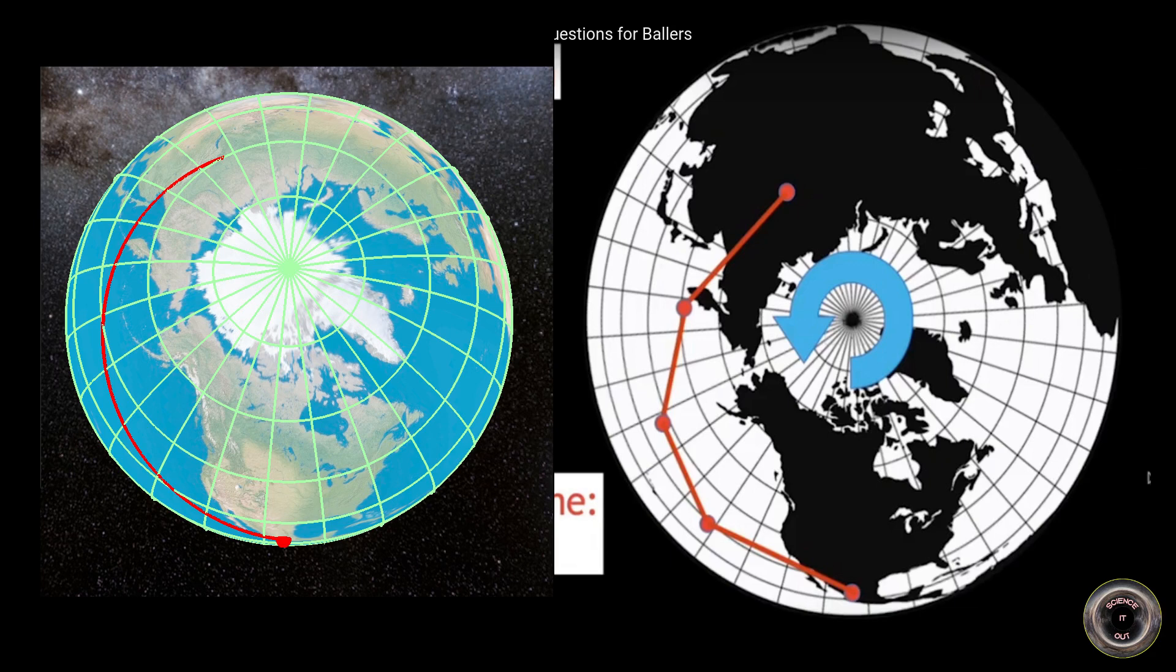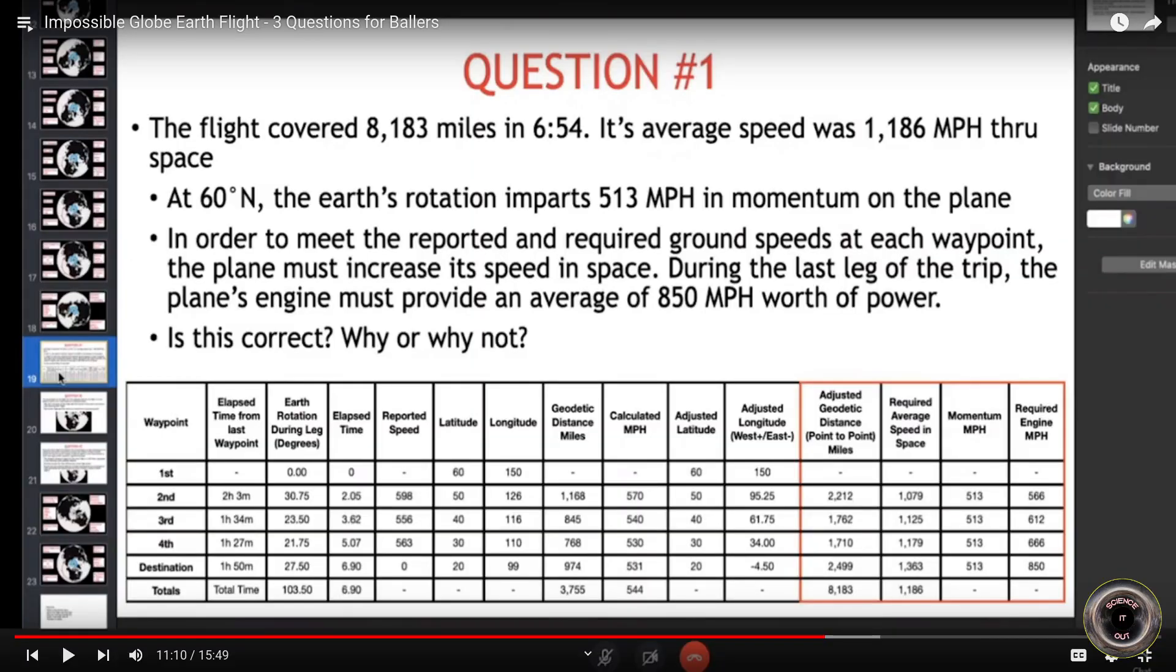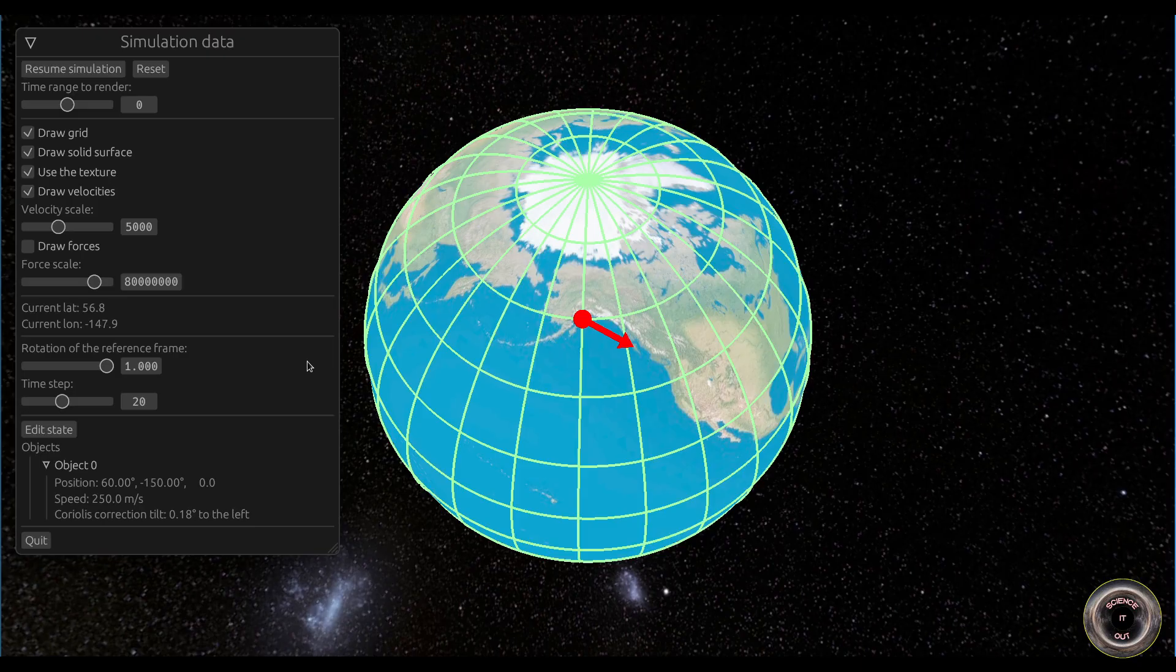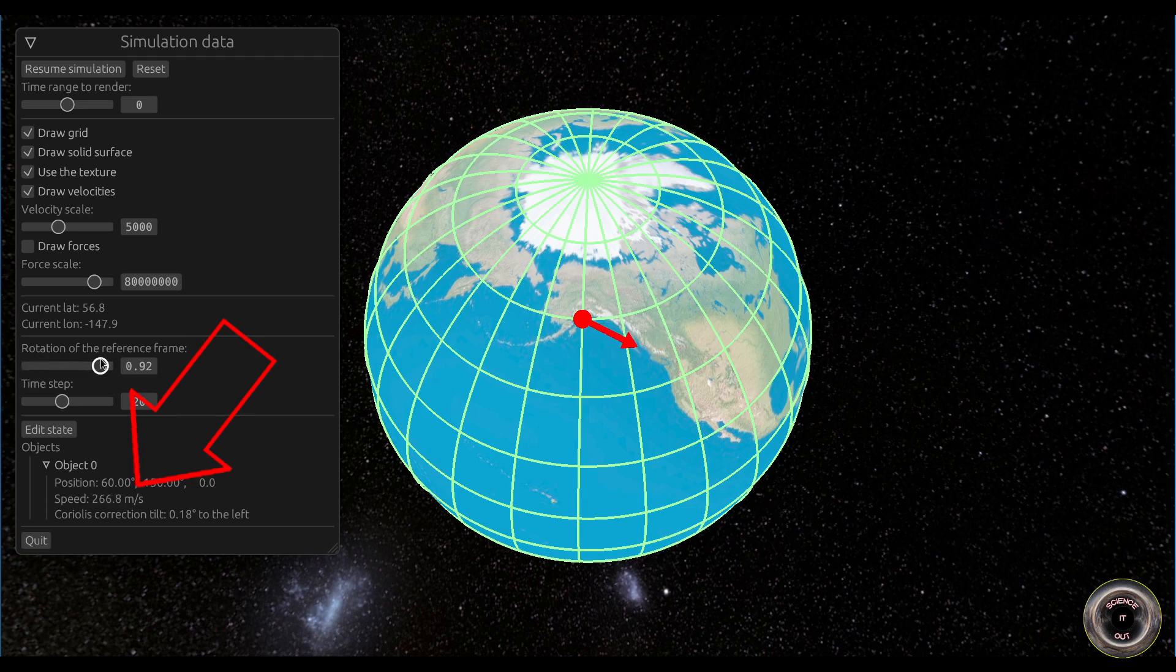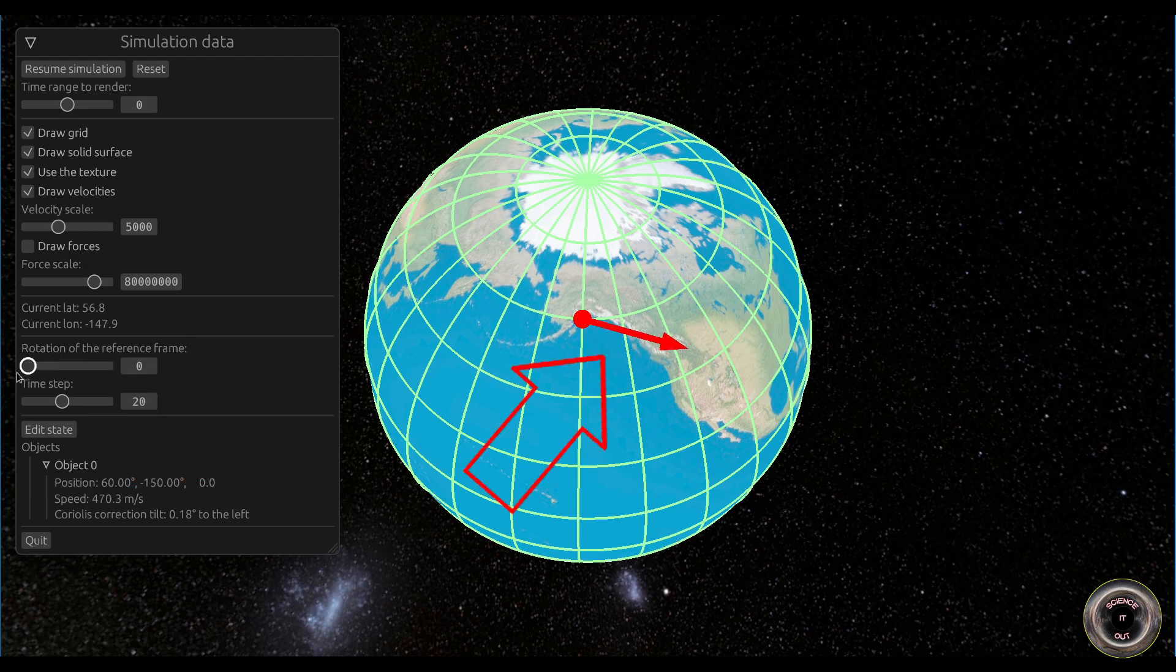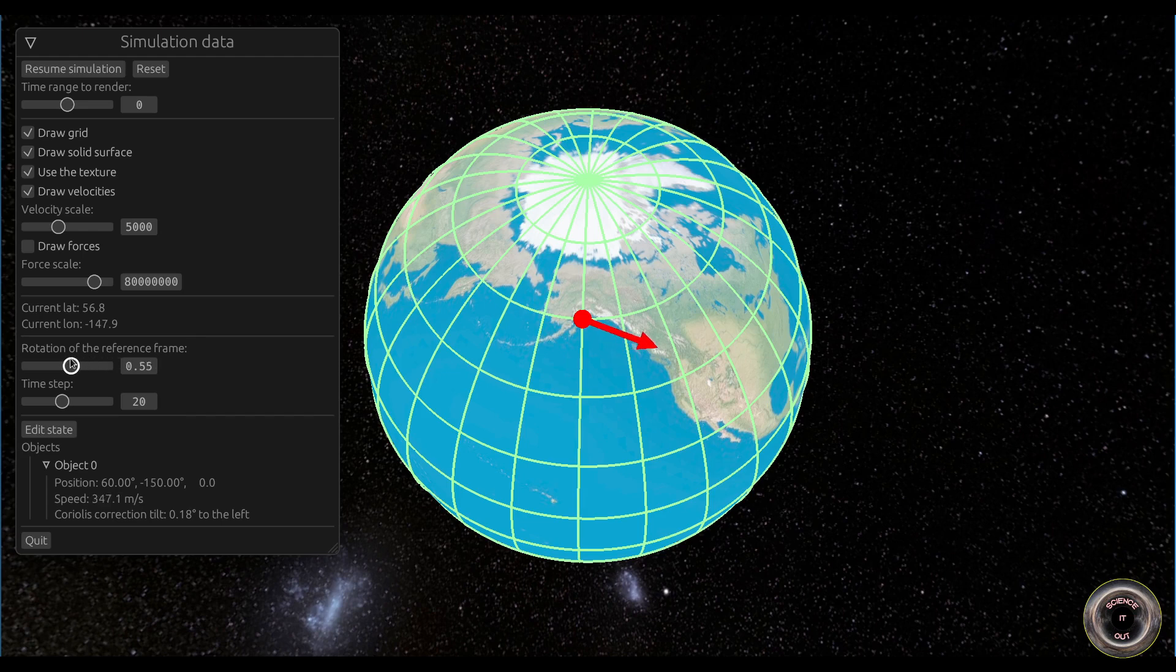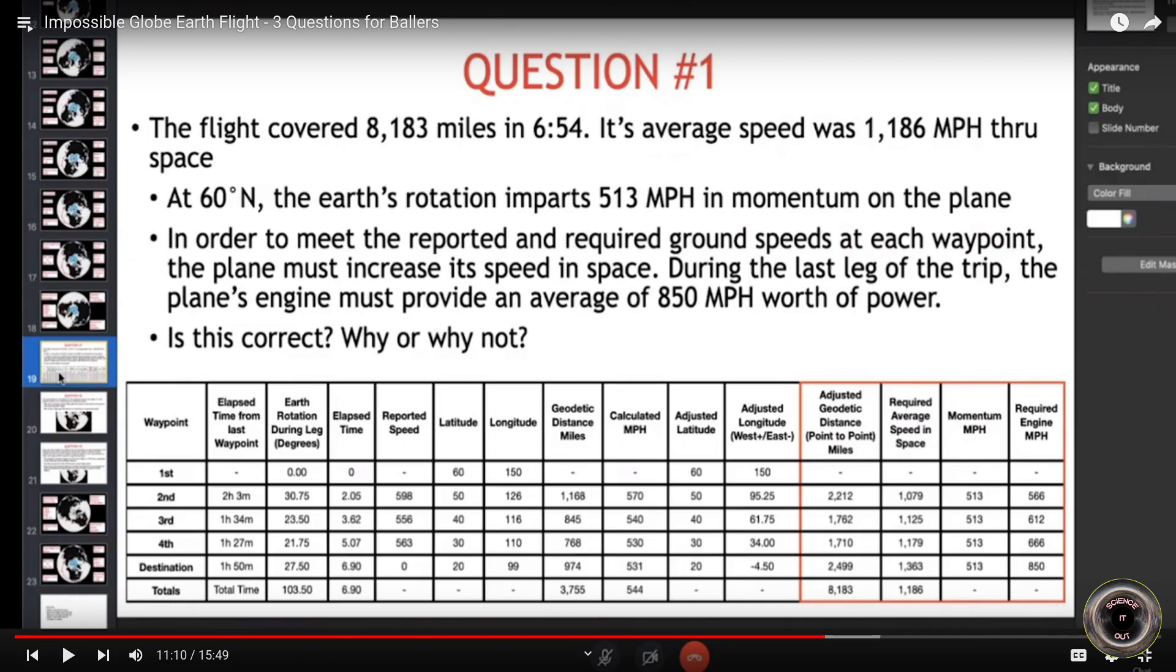So now to the questions. Let's start with question 1. First Brandon states that the earth imparts 513 miles per hour on the plane. Looking at the speed in the rotating frame and in the inertial frame, we see that we have 250 meters per second in the rotating frame and 470 meters per second in the inertial frame. We can see the velocity vector changing while I am changing the reference frames. The difference, 220 meters per second, is not quite equal to the speed of the points of the surface here, because the velocity of the points on the surface is not parallel to the velocity of the plane relative to the surface. And so the magnitude of the vector sum of the velocities isn't equal to the sum of magnitudes. The magnitude of the vector difference would actually be closer to 230 meters per second, which is about 514 miles per hour. Pretty much the value Brandon calculated.